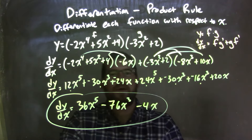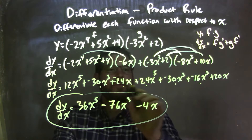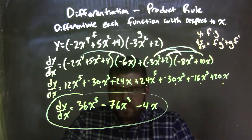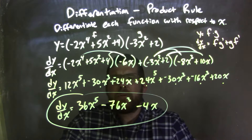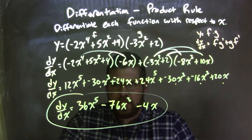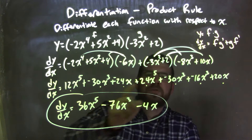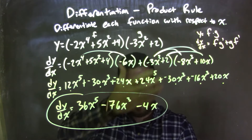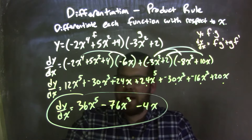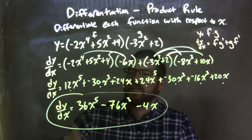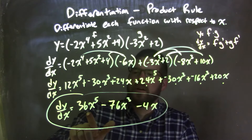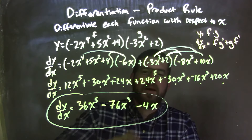Then I simplified by combining my like terms, putting my highest degrees first, and marking which ones I had done to make sure I brought everything down and didn't forget anything. My final answer is dy/dx is equal to 36x to the 5th minus 76x to the 3rd minus 4x.